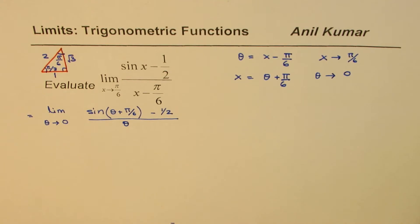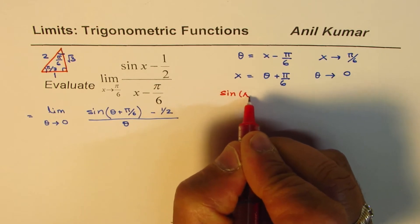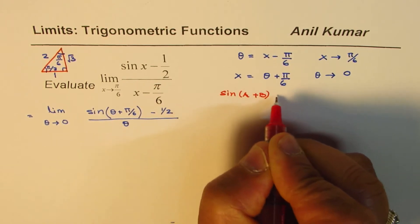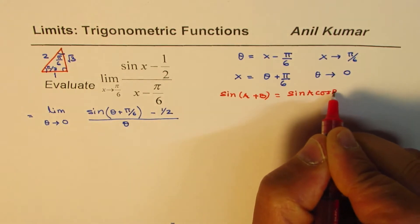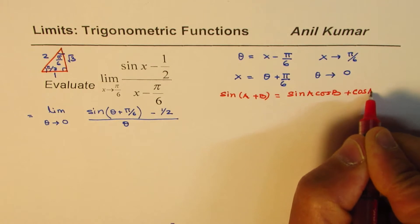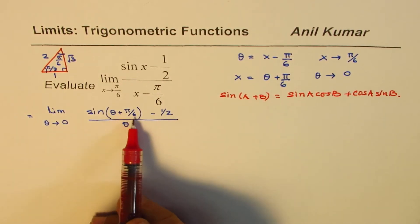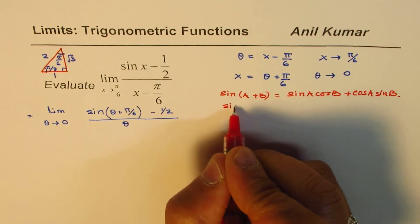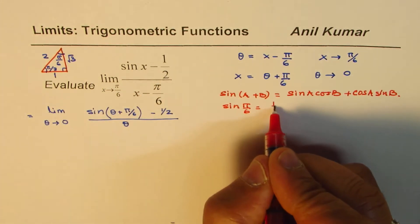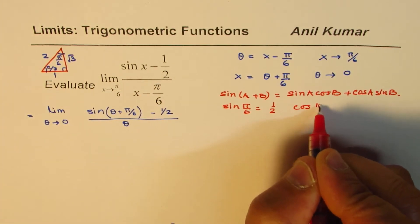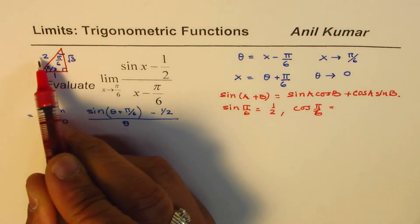Now I'll use the compound angle formula: sin(a + b) = sin a cos b + cos a sin b. For our purposes, sin(π/6) = 1/2 and cos(π/6) = √3/2.